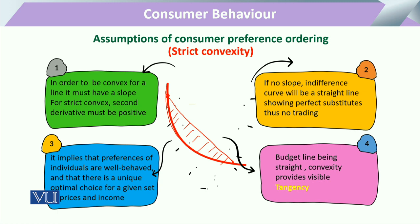Aur in order to be convex, agar ham dekhayin toh iski assumptions kya hain? Koi bhi curve us waqt tak convex nahi ho sakta jab tak ke iske andar is tariqe se slope na paai jaye. Kyunke agar woh slope nahi hai toh woh straight line hamare paas hai. Toh slope actually rate of change hai. Toh woh slope maujood hona hamare liye calculus ke liye bohut zaroori hai. Aur isi tariqe se jab ham second derivative ke zariye curvature ki condition solve karte hain, that is essentially that curvature.